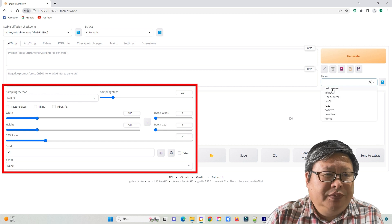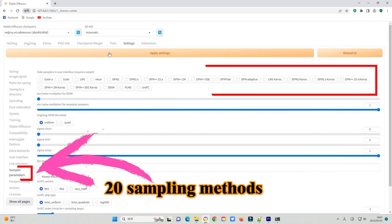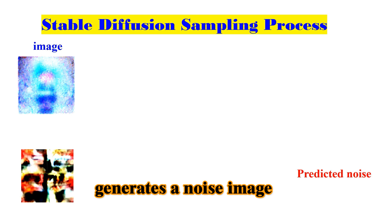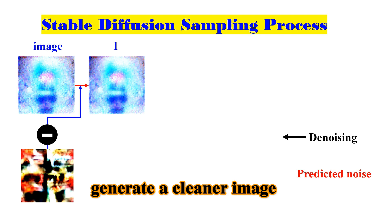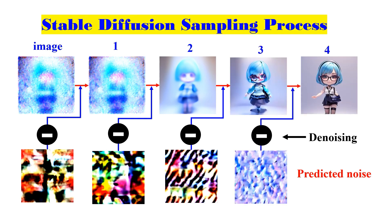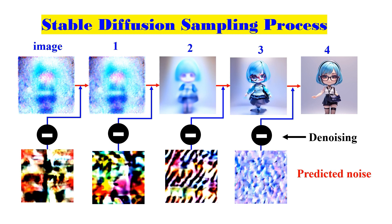Now, move to the parameter area. In the sampling method drop-down list, there are 20 sampling methods available. The sampling method is the algorithm for the denoising process. At first, Stable Diffusion generates a completely random image in the latent space. The noise predictor estimates the noise of the image, then subtracts the predicted noise from the image to generate a clear image. This process is repeated, and finally you get a clean image. This process is called sampling because Stable Diffusion generates a new sample image in each step — this method is called a sampling method.